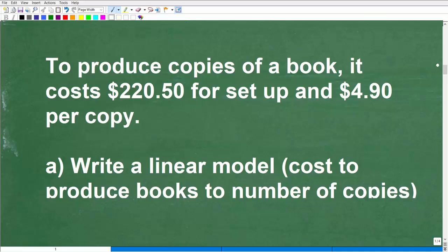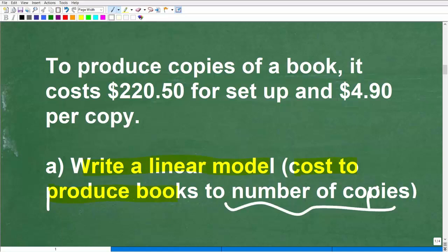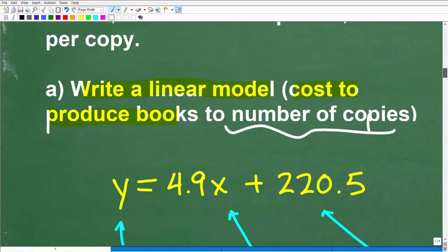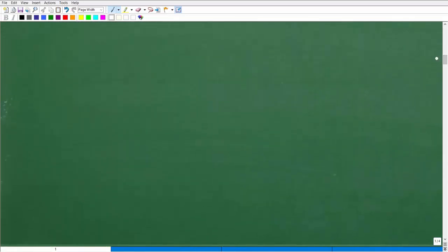The first part of this problem is probably the most important part. That is we want to write a linear model that relates the cost to produce books, the total cost to produce books, based upon the number of copies that we want. So we want to write a linear model that relates these two things. We're talking about a function, if you will.